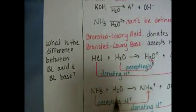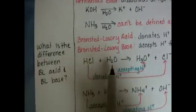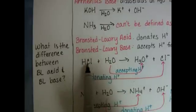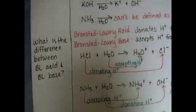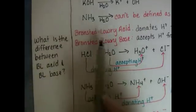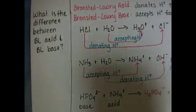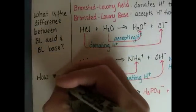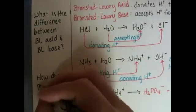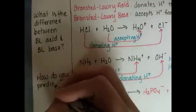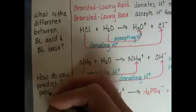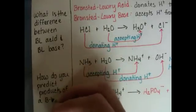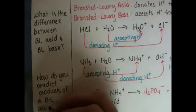I want you to be able to look at a full reaction with the reactants and the products and be able to identify the reactant that's the acid and the reactant that's the base. Knowing the definitions will help you pick those out. Your other study question will be, how do you predict the products of a Bronsted-Lowry acid-base reaction?